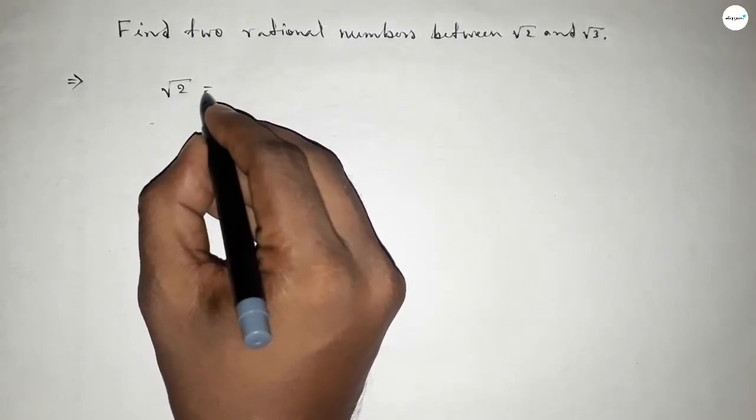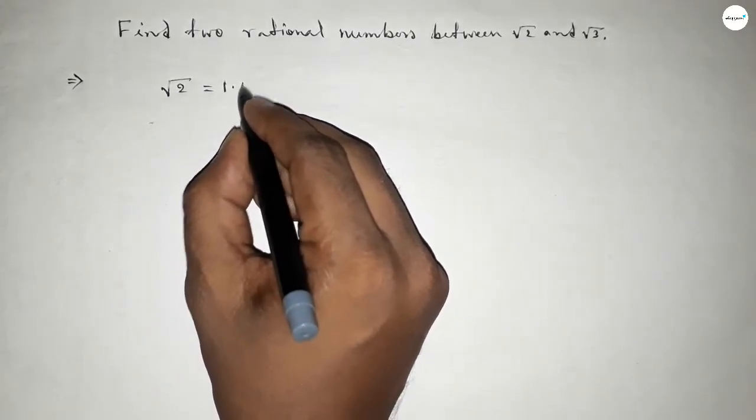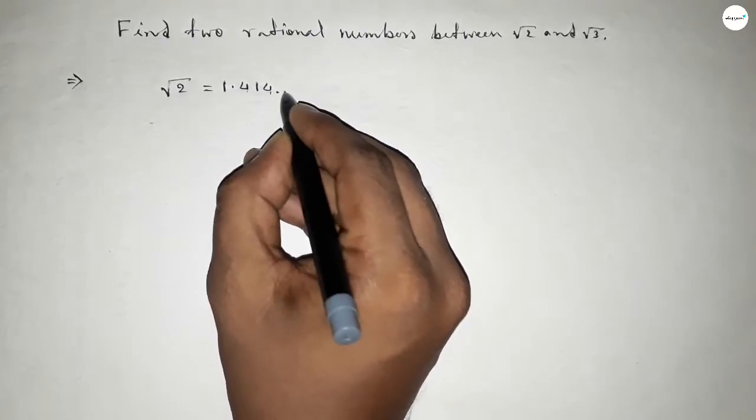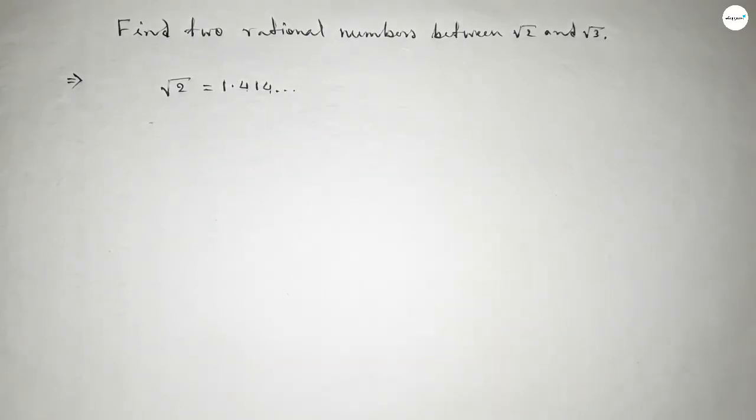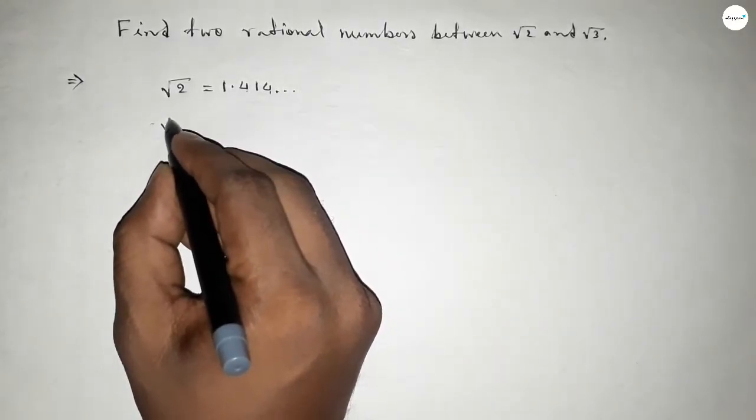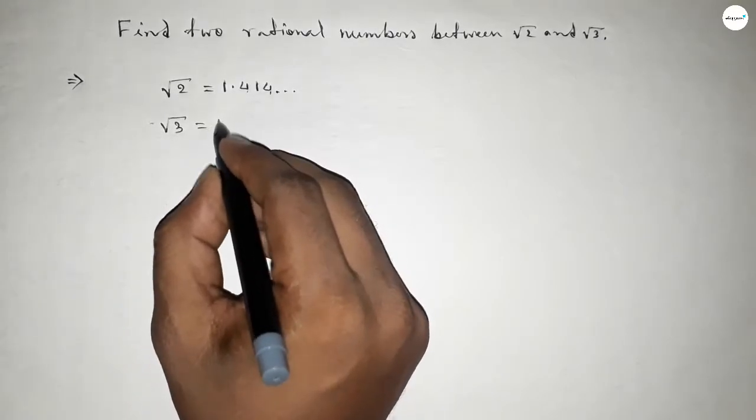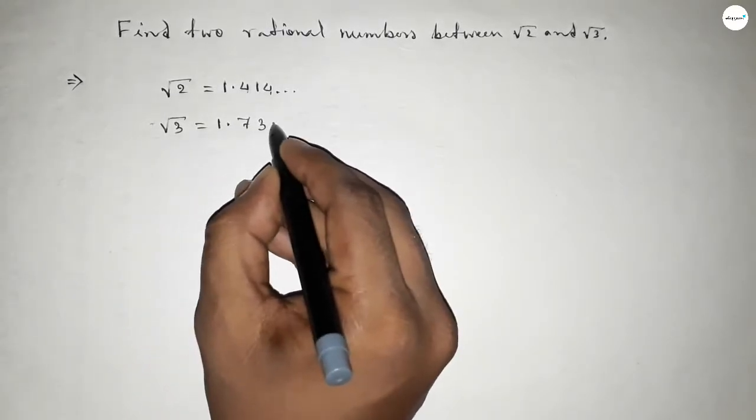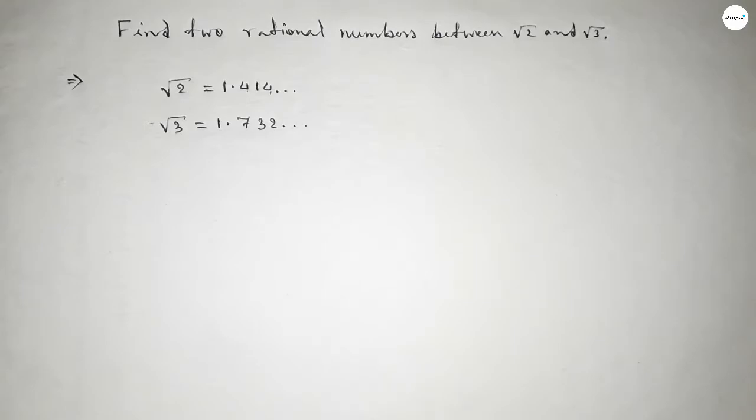So root 2 equals, we know that, 1.414 and continuous, and root 3 equals, we know that, 1.732 and continuous. If you don't know how to find out the value of root 2 and root 3, then please watch my video which I give in the i button.